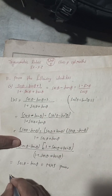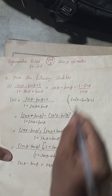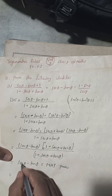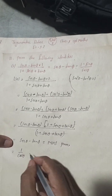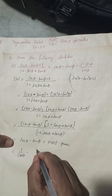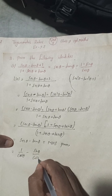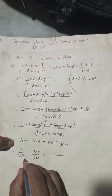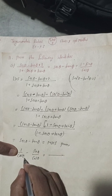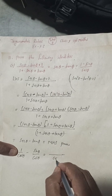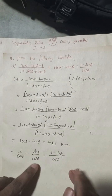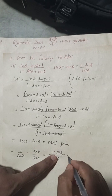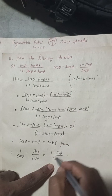Now we prove MHS equals RHS. Starting from sec θ − tan θ, we write sec θ as 1/cos θ and tan θ as sin θ/cos θ. Both fractions have the same denominator cos θ, so taking LCM gives (1 − sin θ) / cos θ, which equals the RHS.